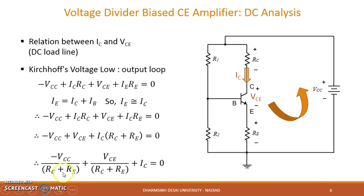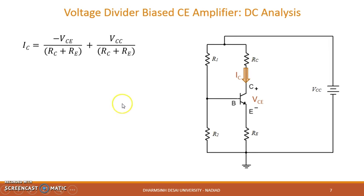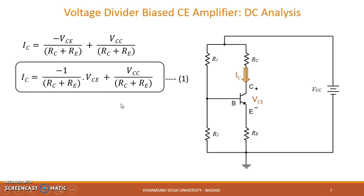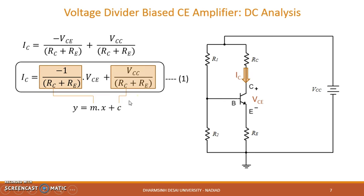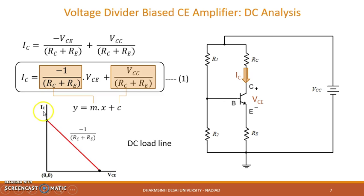Bringing all terms except IC to the other side and rearranging gives equation number one. Comparing this equation with the equation of a straight line, we can see that the relation between IC and VCE is nothing but a straight line, having a slope equal to −1/(RC + RE) and a constant of intersection. Since this line is obtained in DC analysis and its slope depends on the load resistance RC, it is called the DC load line.